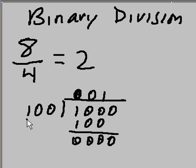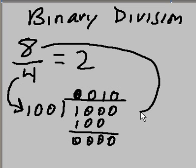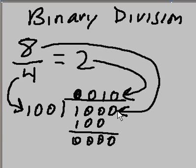Subtract. How many times does 1, 0, 0 go into 0, 0, 0, 0? And that's 0 times. So here is my 4, there is my 8, and my answer is 2: 0, 0, 1, 0.